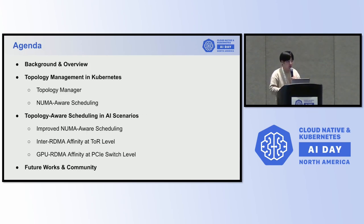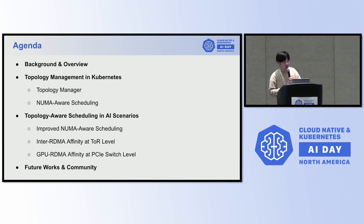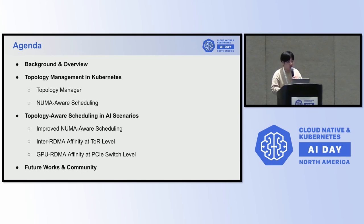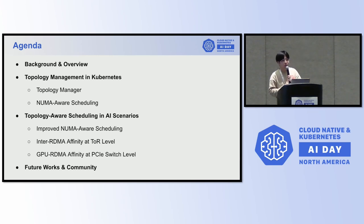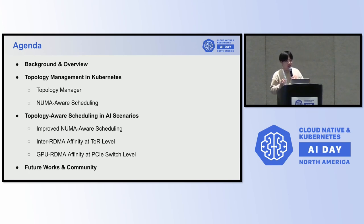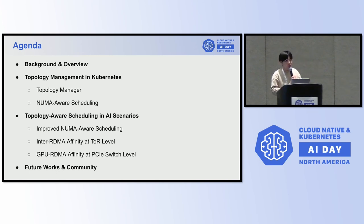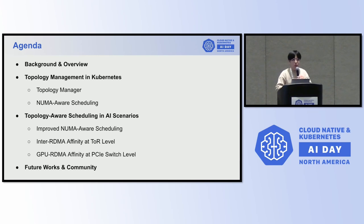I'd like to begin with an introduction of the background of large language models and its integration with cloud-native technology, and then give an overall introduction to the Catalyst project. Next, I will introduce topology management mechanisms in Kubernetes, including the node-level topology manager and the cluster-level topology-aware scheduling solution, along with their limitations. Then I will present how Catalyst implements topology-aware scheduling in AI scenarios, including improved NUMA-aware scheduling, inter-RDMA affinity at ToR level, and GPU-RDMA affinity at the PCIe switching level. Finally, I will discuss the future roadmaps of Catalyst in the Cloud Native AI domain and introduce the Catalyst community.